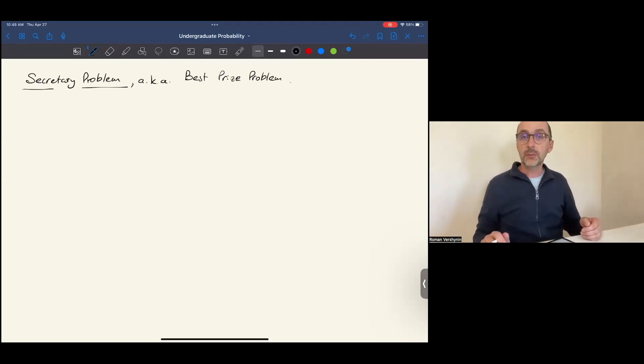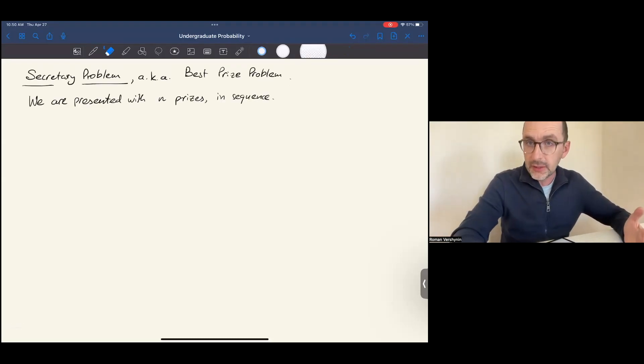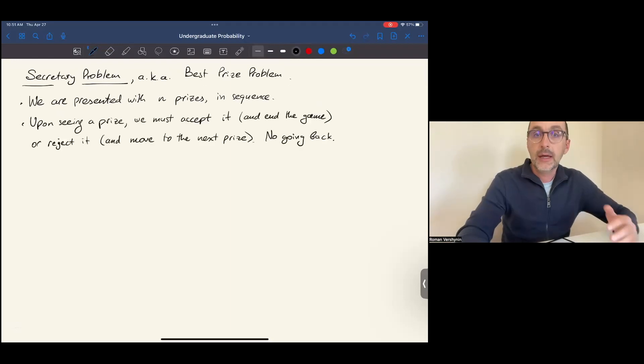Suppose we are presented with n prizes in sequence. Upon seeing a prize, we must either accept it and end the game, or reject it and move to the next prize. There is no going back. At each time, the only information we are given is how the current prize compares to the prizes that we have already seen.